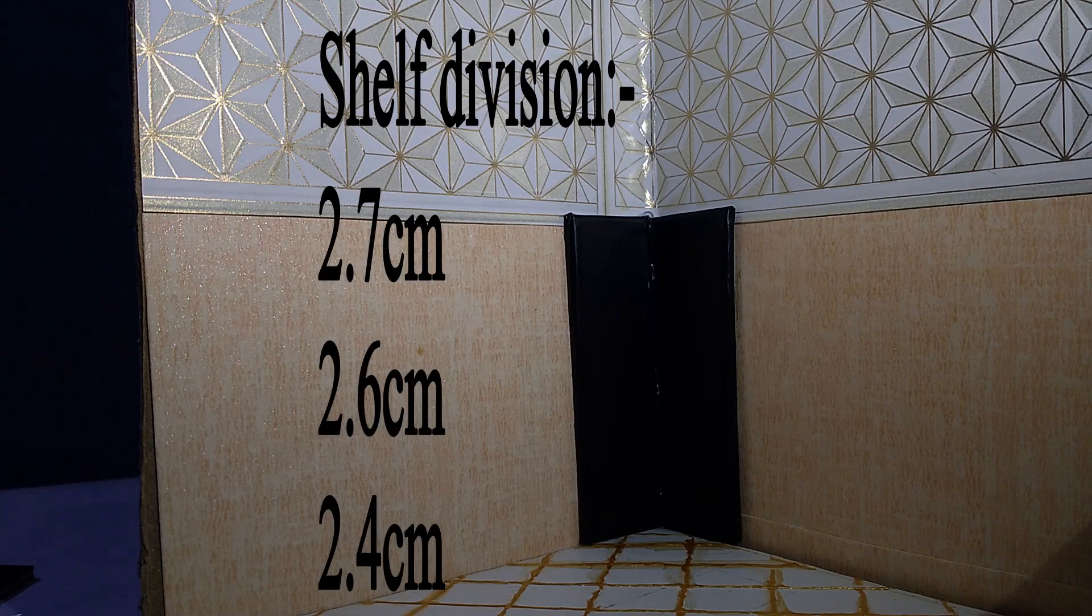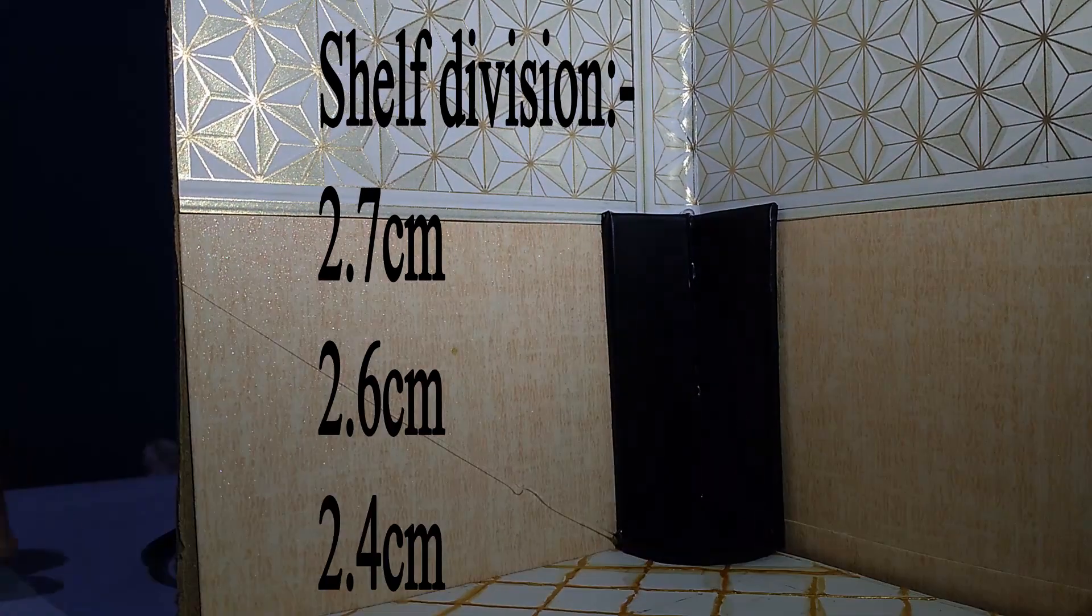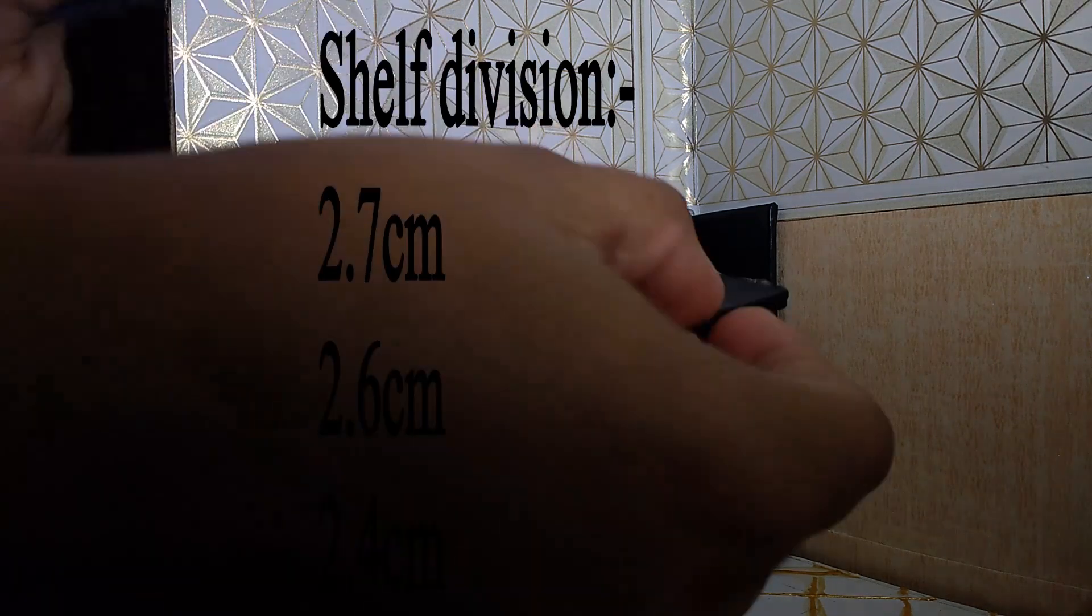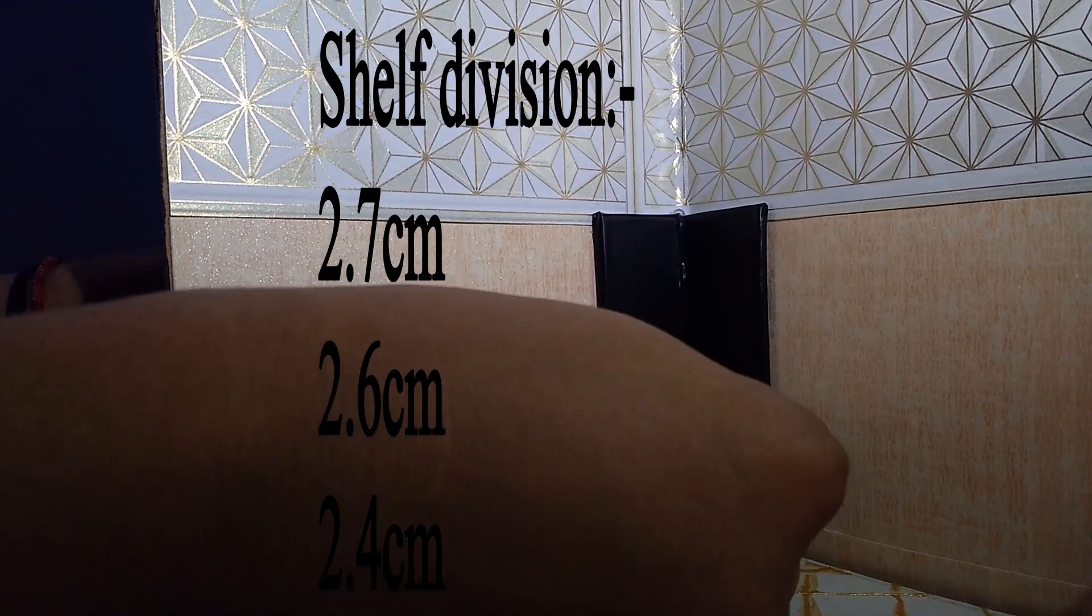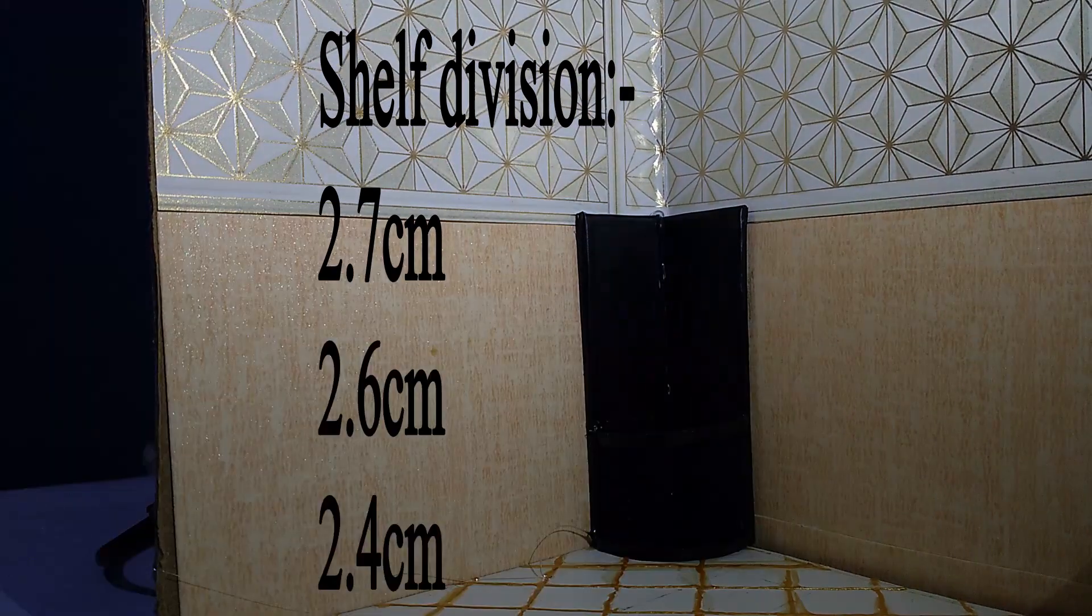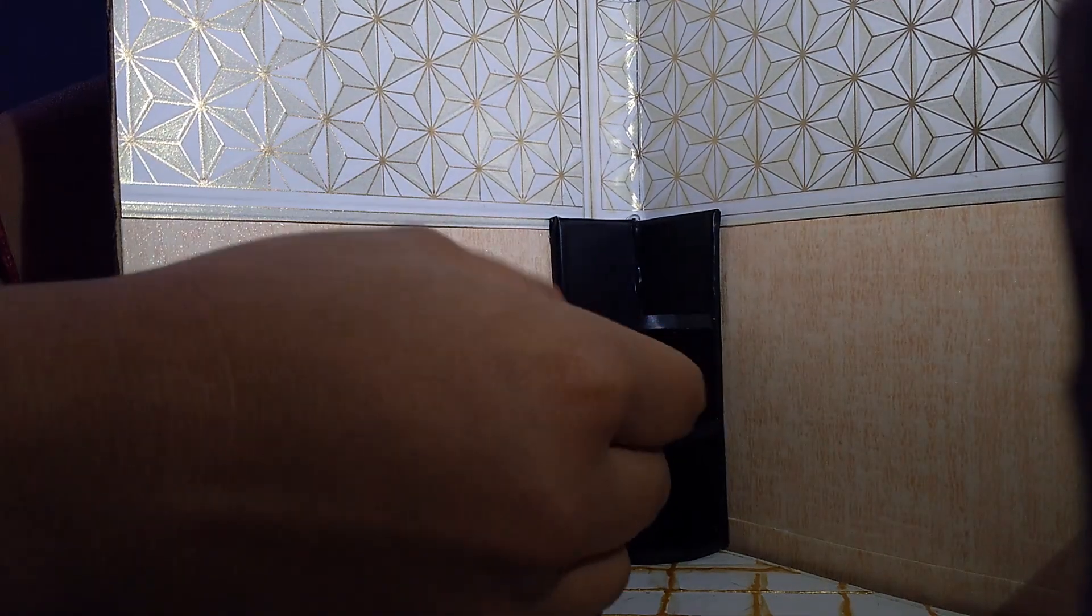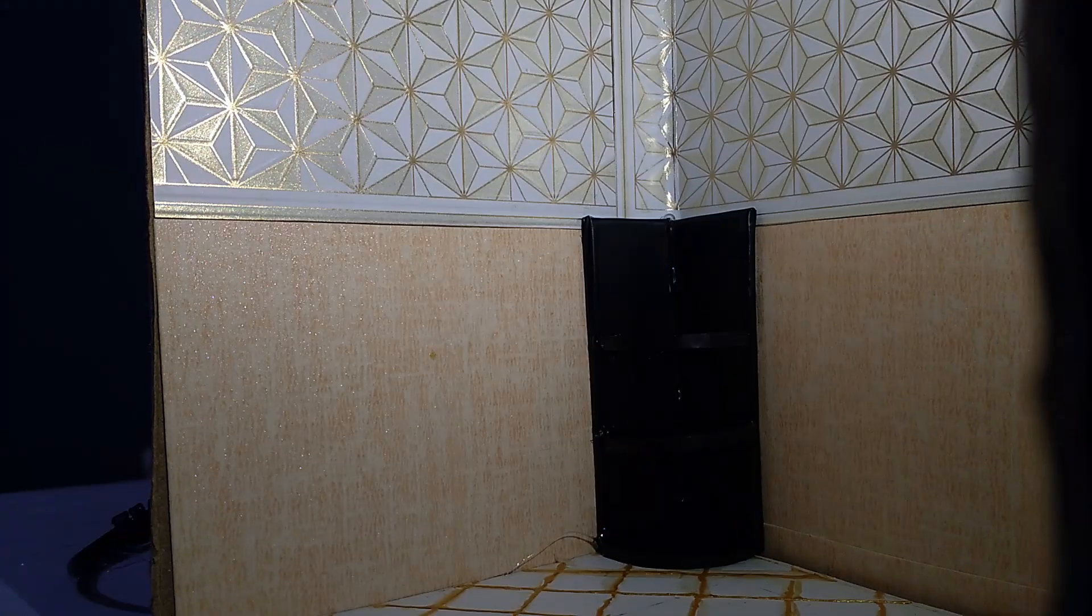This is the shelf division from the bottom. From the first bottom shelf to the second shelf it is 2.4 centimeters. From the second shelf to the third shelf it is 2.6 centimeters. From the third shelf to the fourth shelf it is 2.7 centimeters. I've given the measurements according to the items I'm gonna place over the shelf, so you guys can make your own division or measurement as you want.